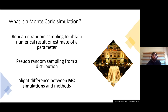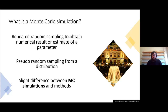First, what is a Monte Carlo simulation? The essence is that you repeatedly randomly sample to obtain a numerical result or estimate of a parameter. In R, we're not completely random — we're actually pseudo-randomly sampling from a known probability distribution.